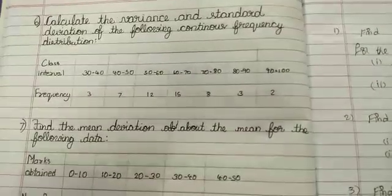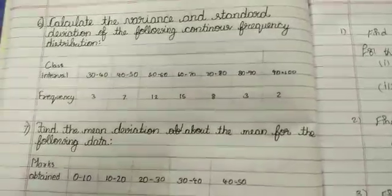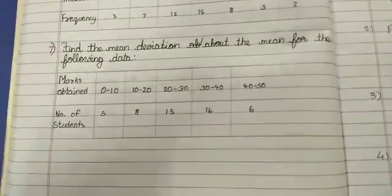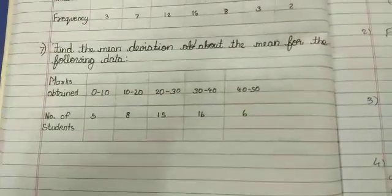30 to 40, start now, 90 to 100. Frequencies 3, 2, 2, 2. Next, mean deviation about the mean.